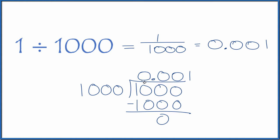So 1 divided by 1,000 is the decimal 0.001, or the fraction 1 over 1,000.